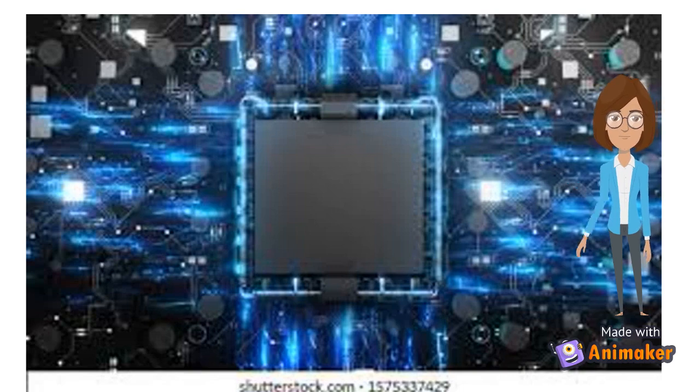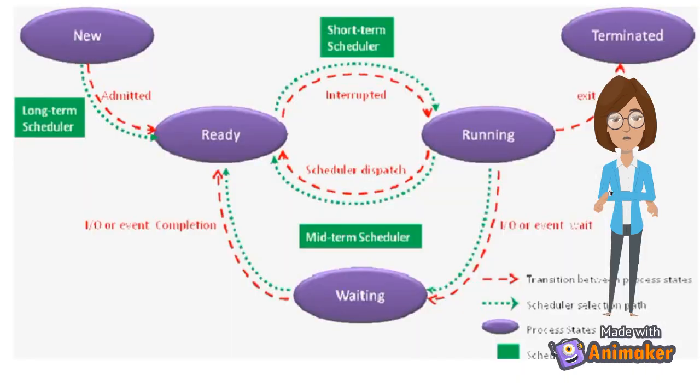The process states are switched from state to another and that helps CPU to decide the execution queue of the process. For example, process switched from new process to ready state by admitting the process, process switched from running to waiting, and process switched from running to ready state which interrupt execution.